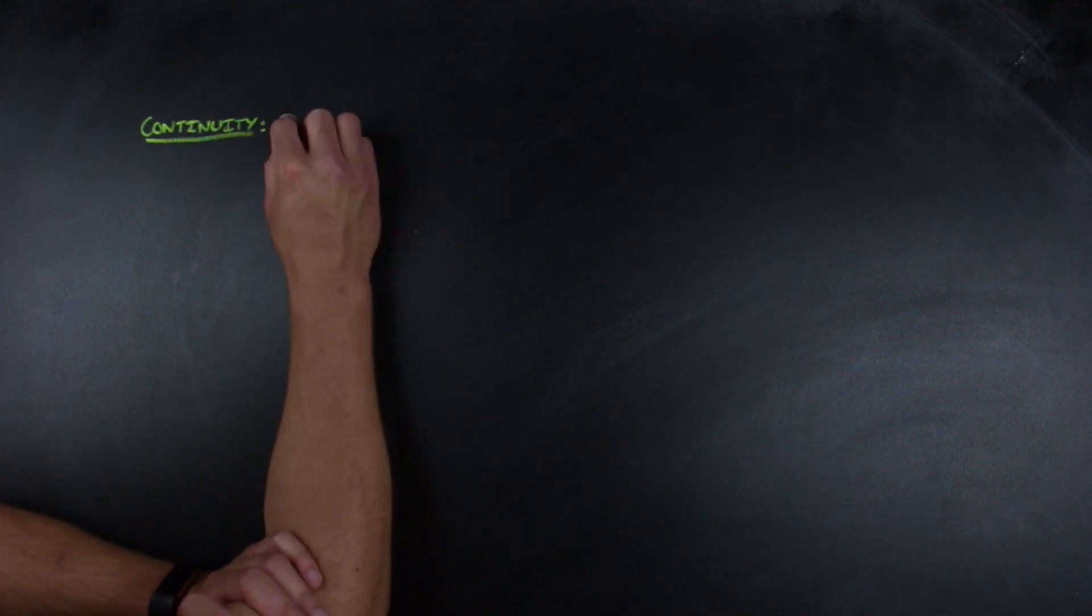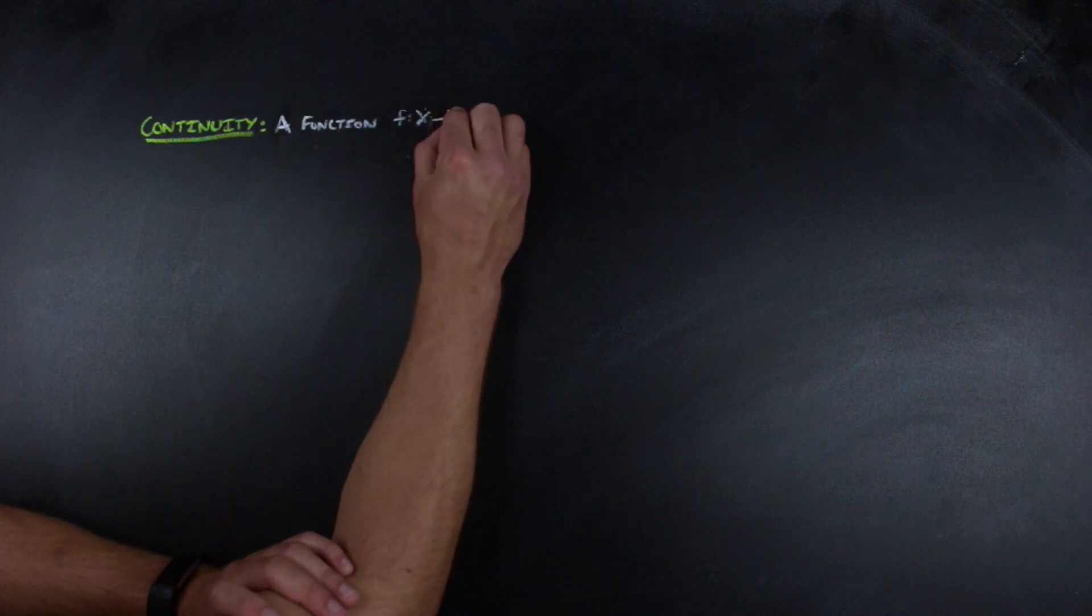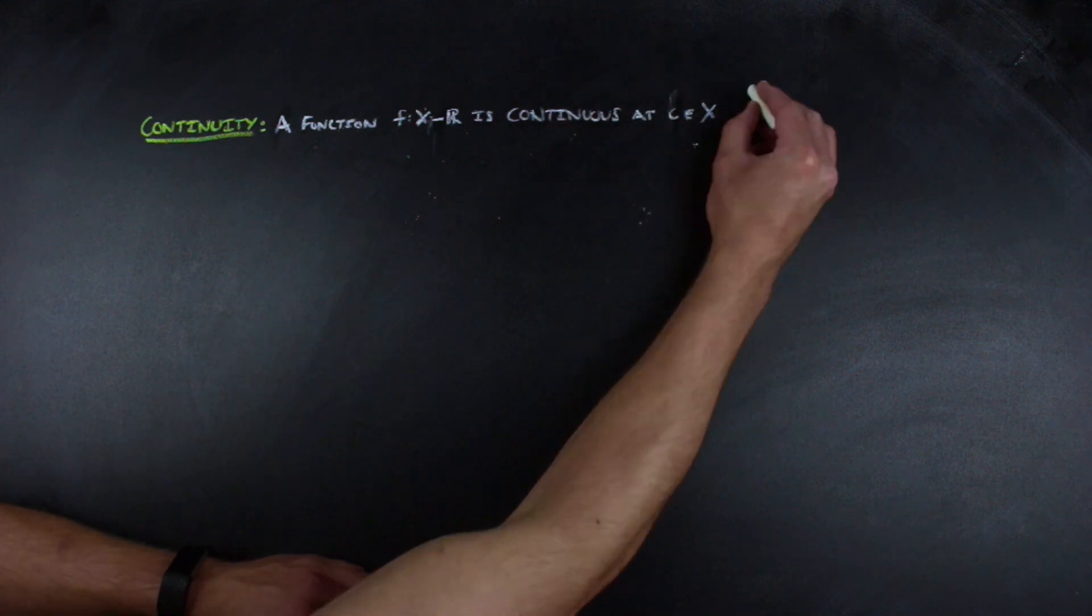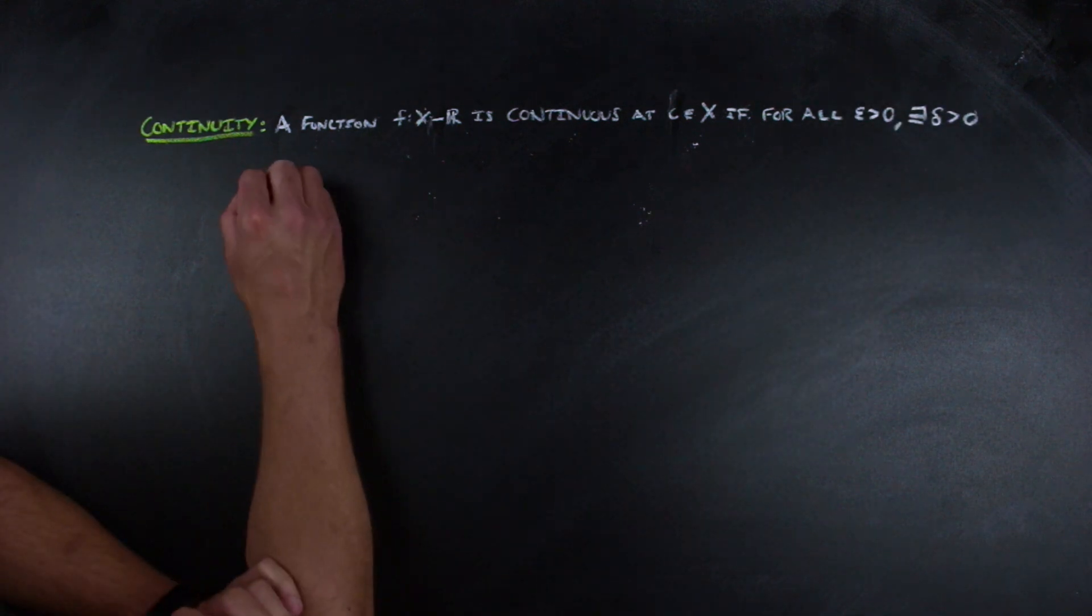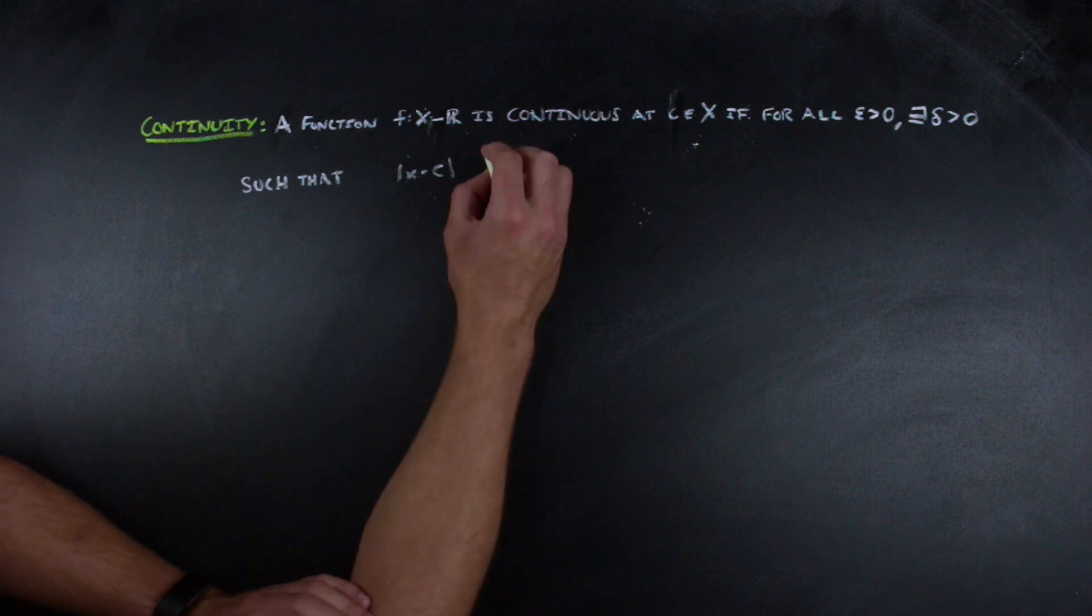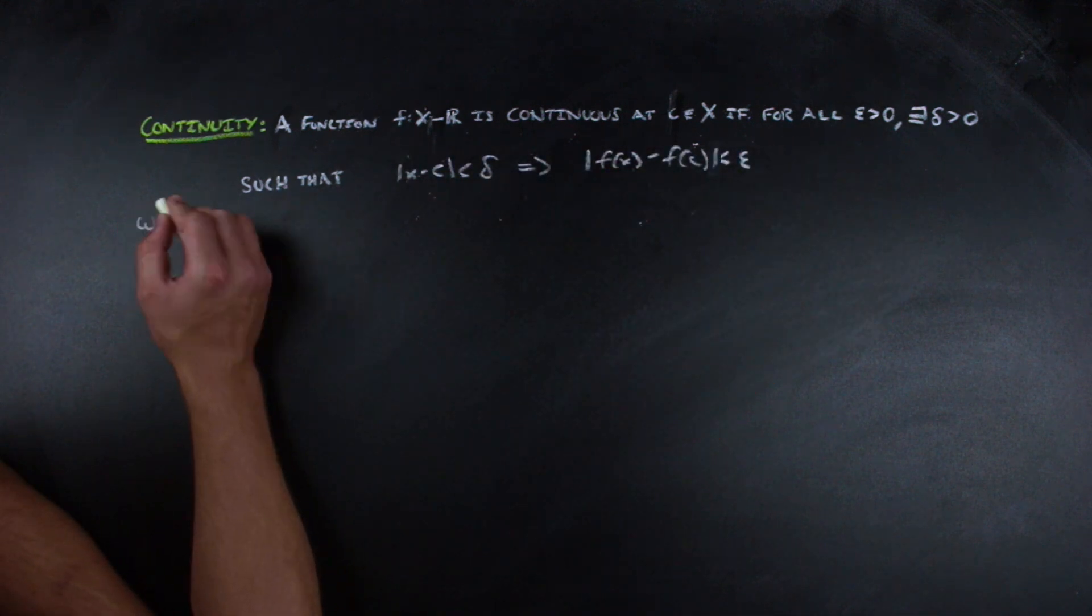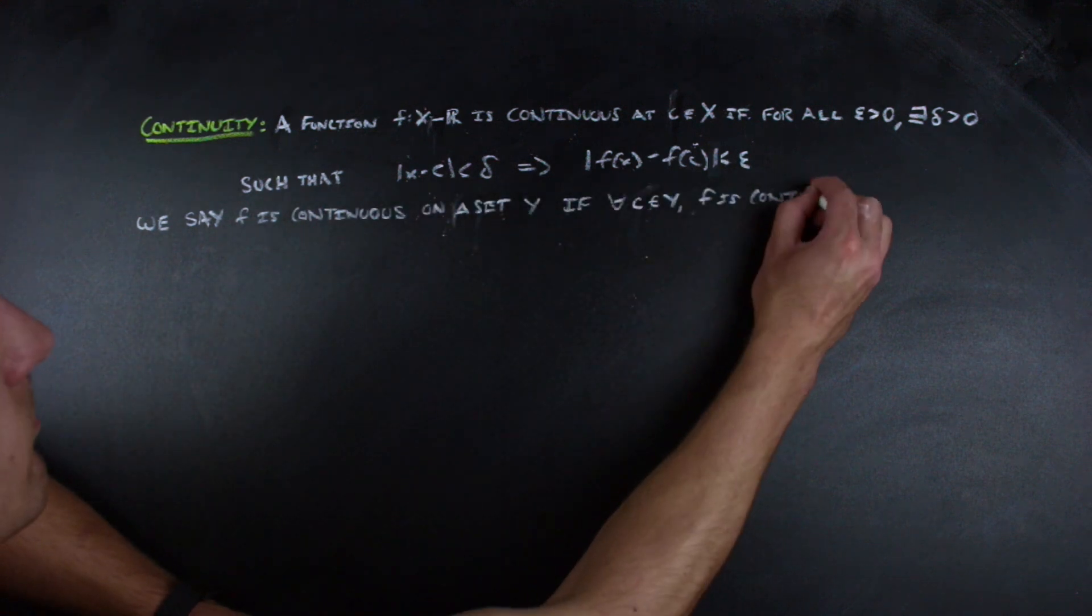Next on the docket is continuity. Continuity is a bit more technical than the intuition behind it lets on. So a function is continuous at a point c in its domain if for all epsilon greater than zero there exists a delta greater than zero, such that whenever the absolute value of the difference between x and c is less than delta, the absolute value of the difference in the images is less than epsilon. We say that f is continuous on a set if it is continuous at all points in that set.